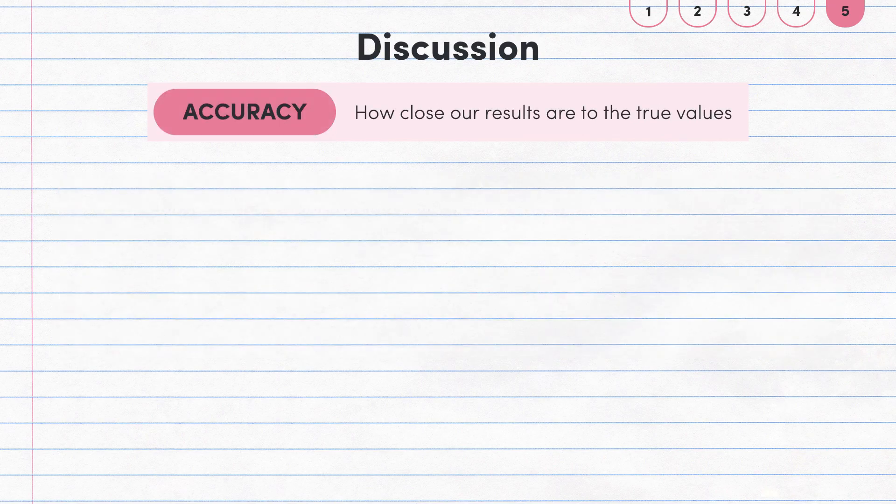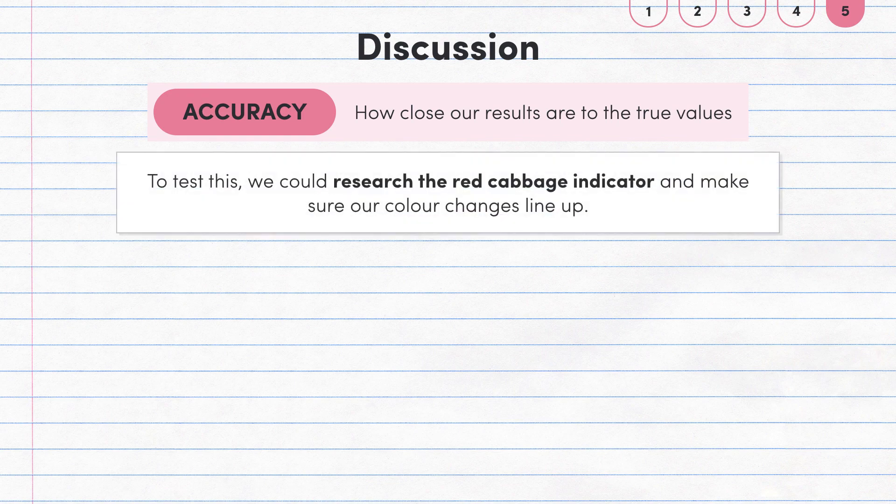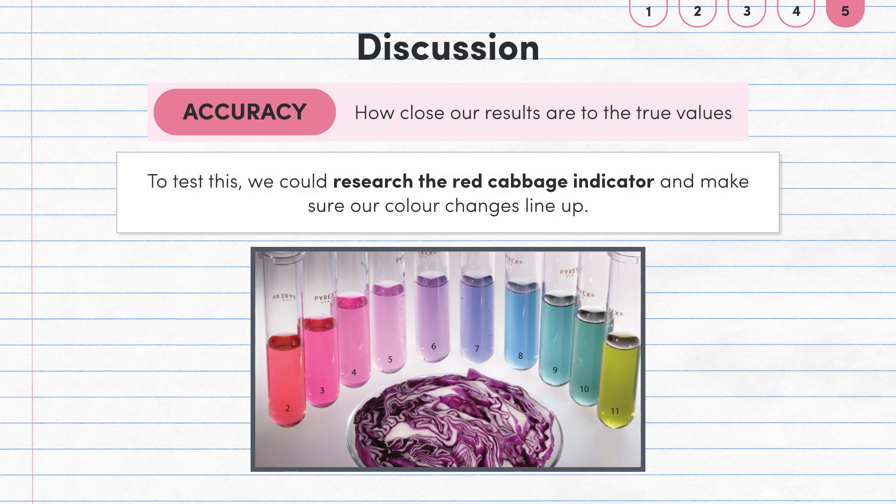Our final thing to consider is accuracy, which is how close our results are to the true values or what we should be getting. To make sure our results are accurate, we could research the red cabbage indicator and make sure that our colour changes line up.